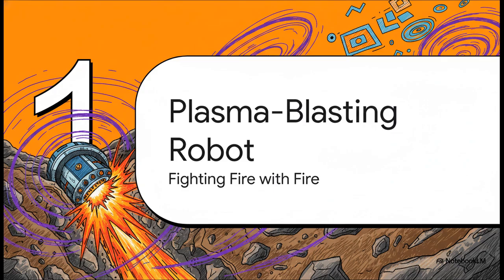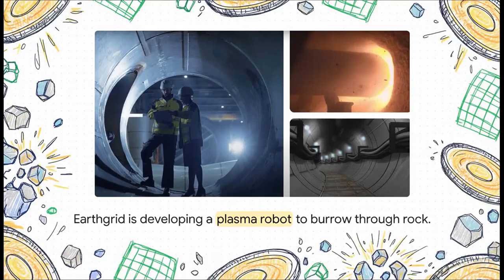Let's start with an idea that sounds like it was ripped straight from a sci-fi movie: a plasma-blasting robot. A robot that literally melts its way through the Earth. There's a startup in San Francisco called EarthGrid, and they're developing a machine they call the Rapid Burrowing Robot, or RBR. The whole idea is to use discs packed with plasma torches to carve out tunnels for things like fiber-optic cables and power lines.